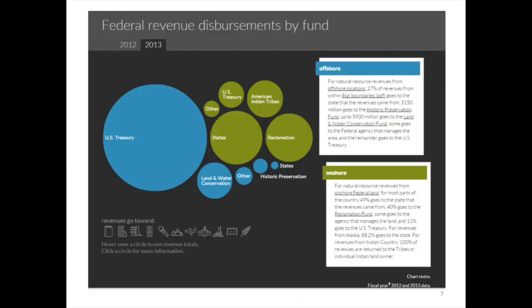We learned that folks wanted an easy way to distinguish the offshore revenues from the onshore revenues and where those revenues were going. In these large circles, you can see proportionately where most of the revenues go — the larger circle goes to the U.S. Treasury. There are two colors: blue represents revenues from offshore and green represents revenues from onshore. If you click on any one of these, the amount of revenues and related information will be displayed.